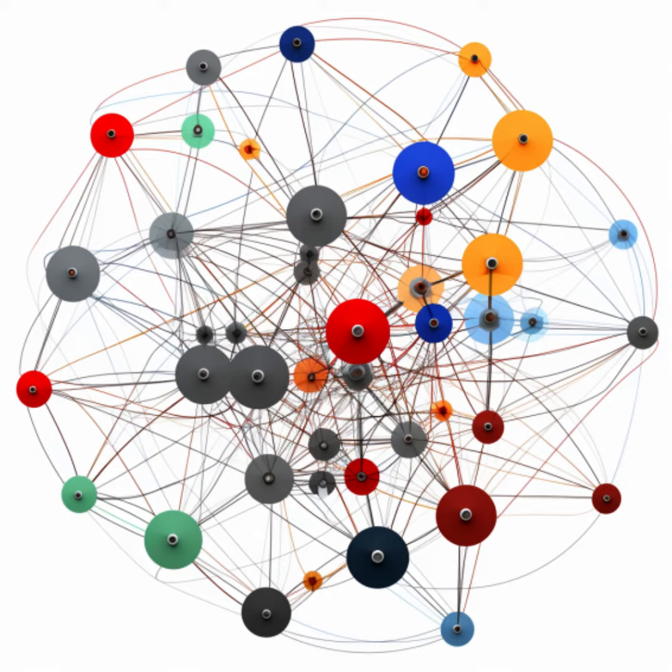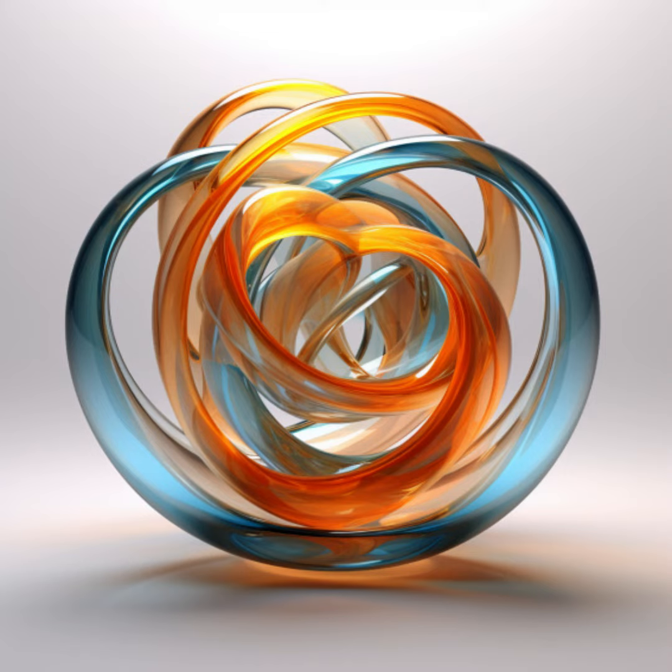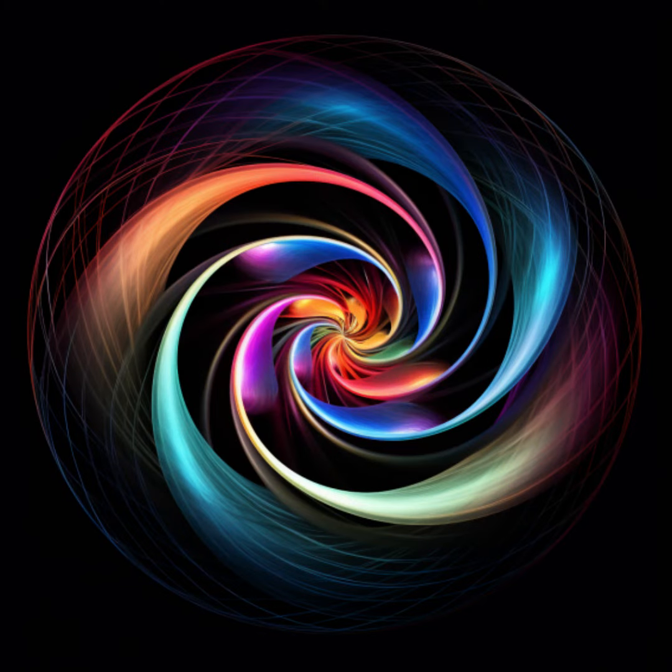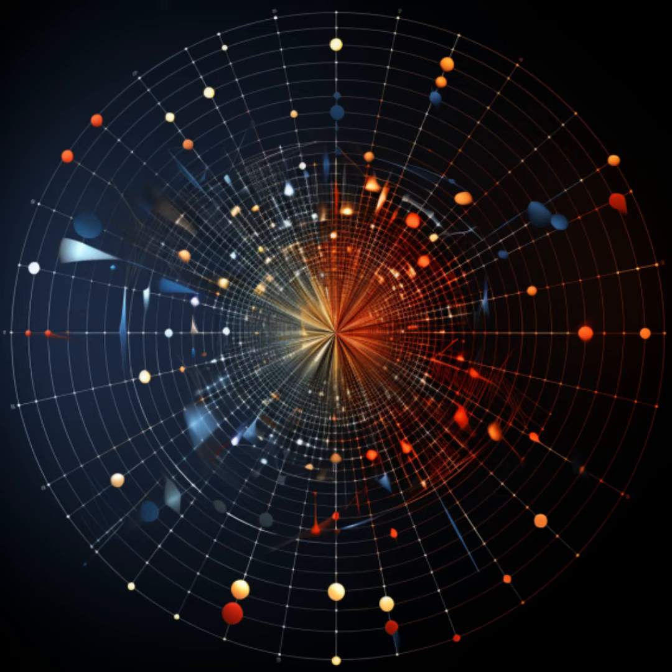Grigori Perelman's proof tackled the problem in a more general setting using Ricci flow and geometric analysis. He introduced the concept of a canonical neighborhood and used sophisticated mathematical tools to show that under the Ricci flow, any three-dimensional manifold satisfying the conditions of the conjecture would eventually evolve into a three-sphere. By demonstrating that this was the only possible outcome, he proved the Poincaré conjecture.